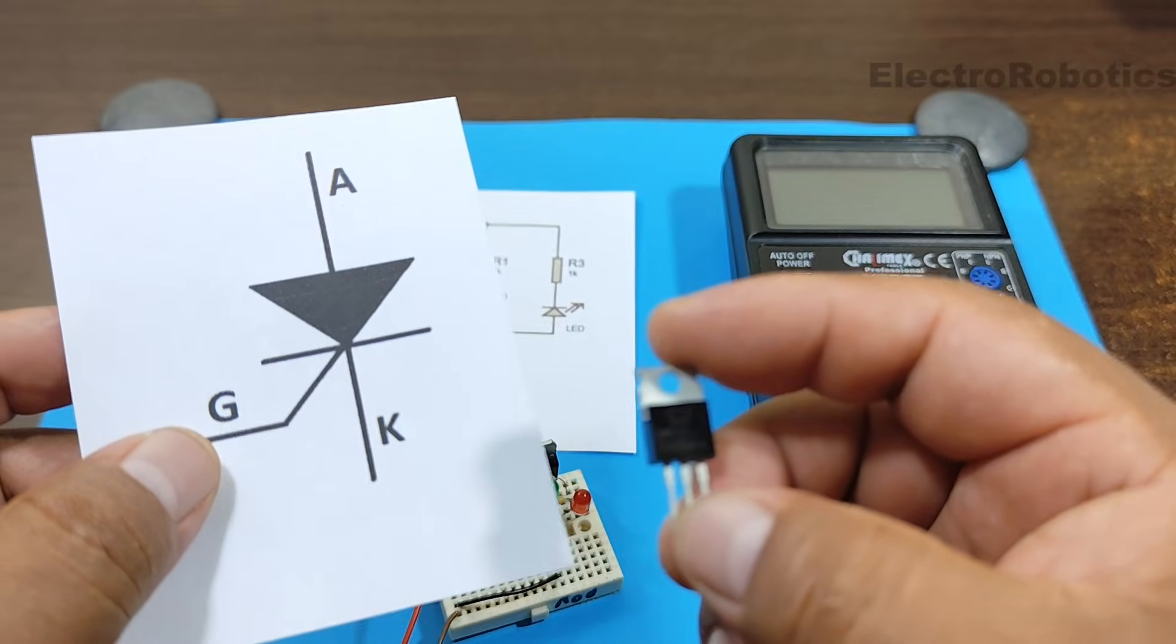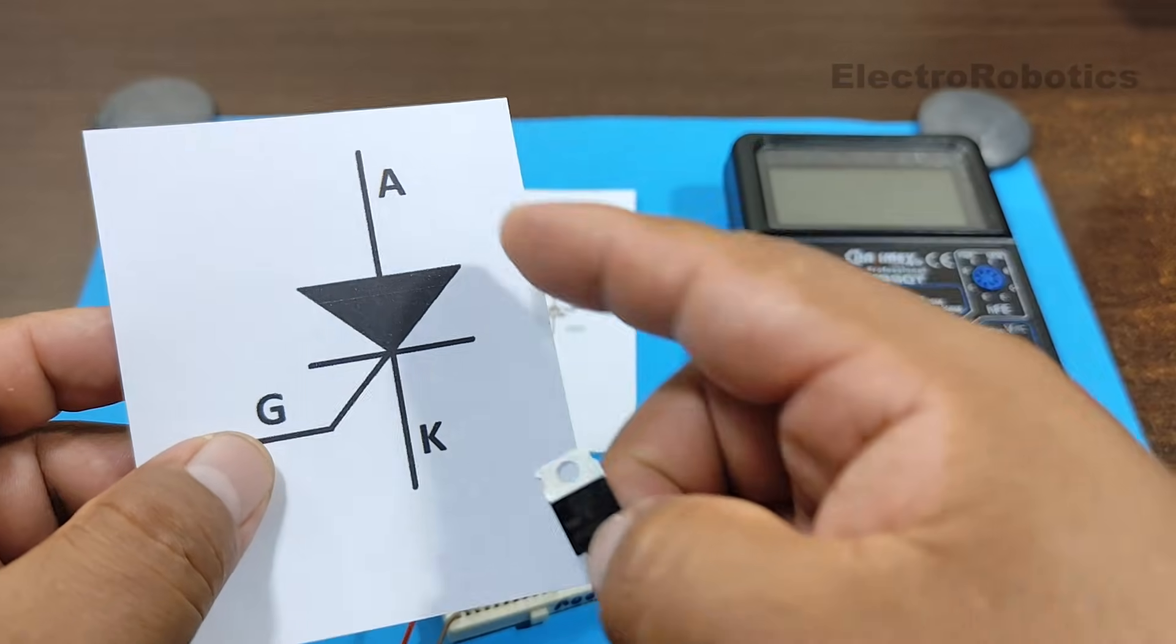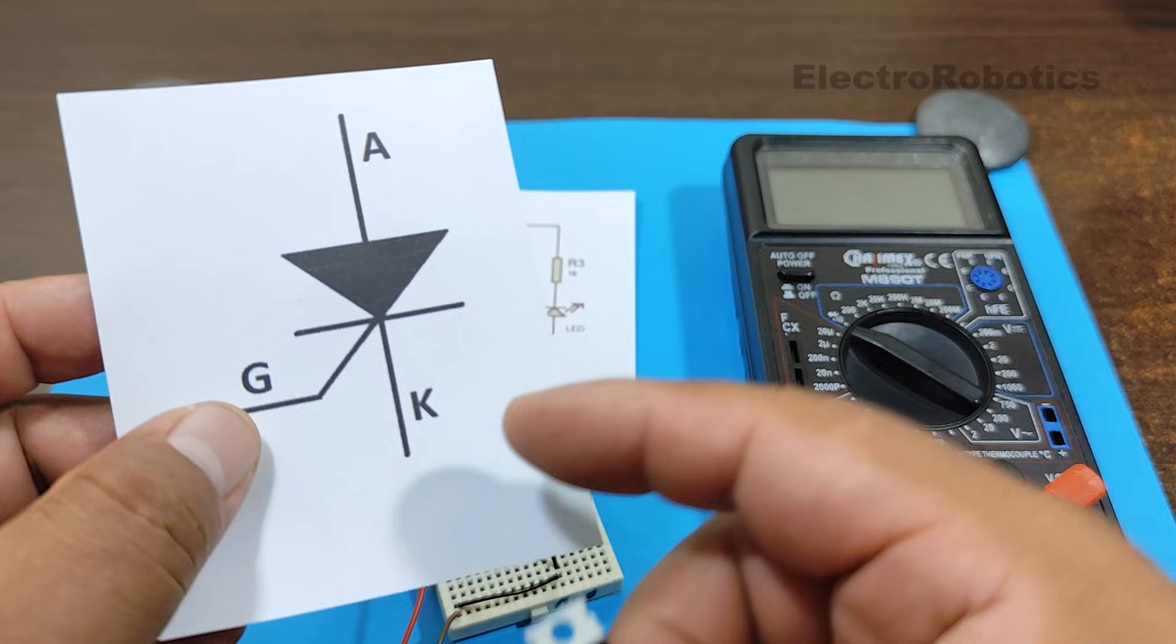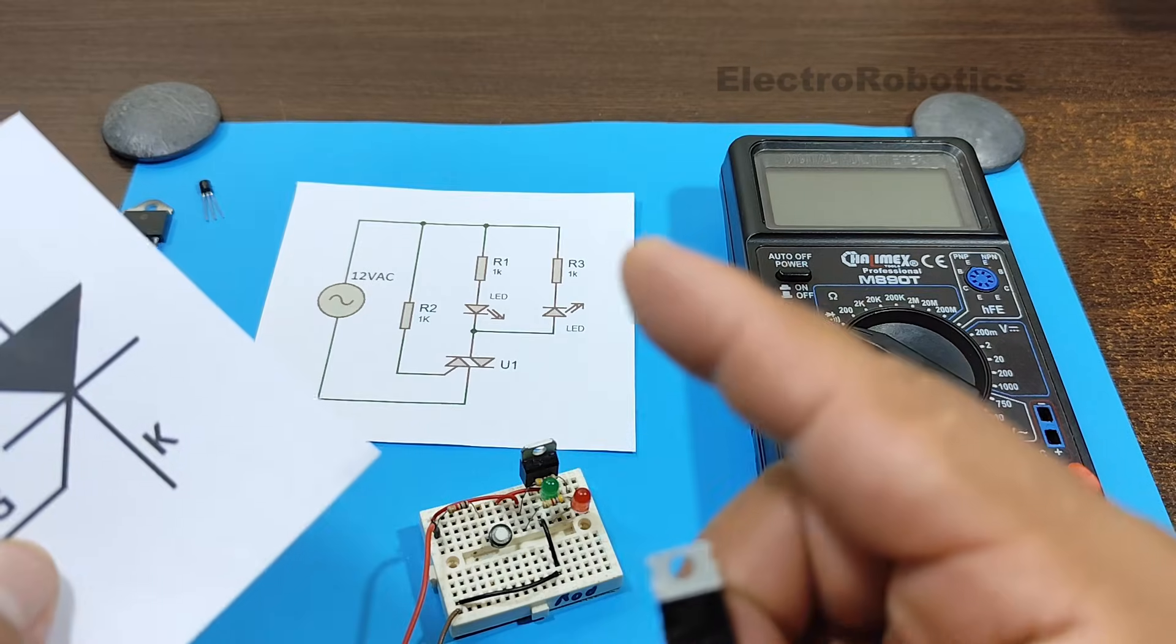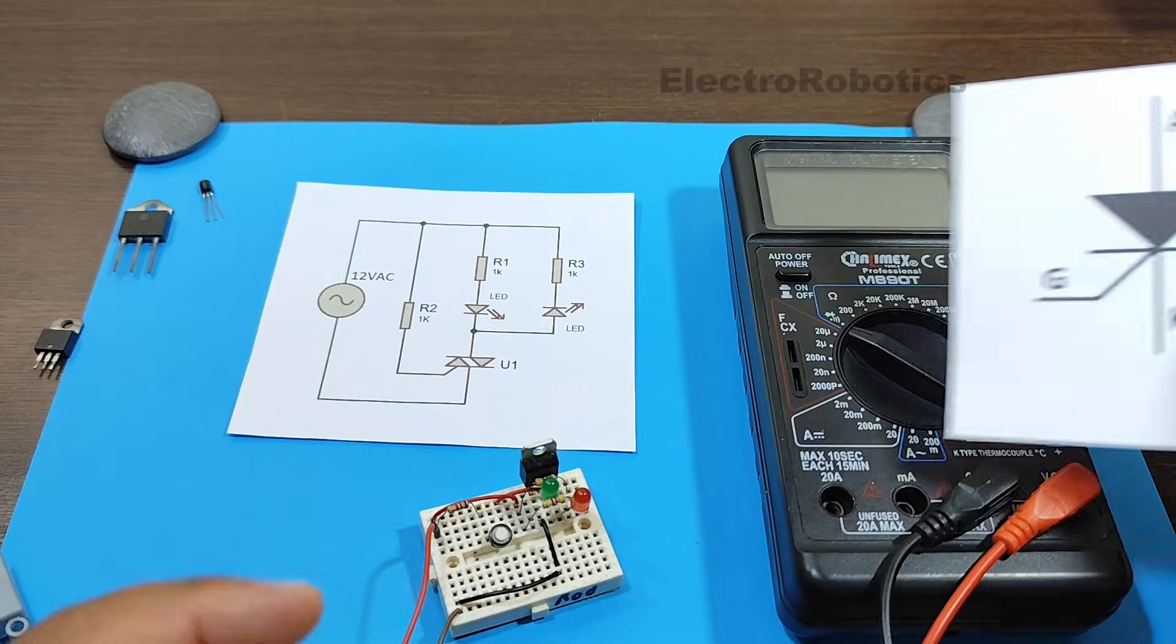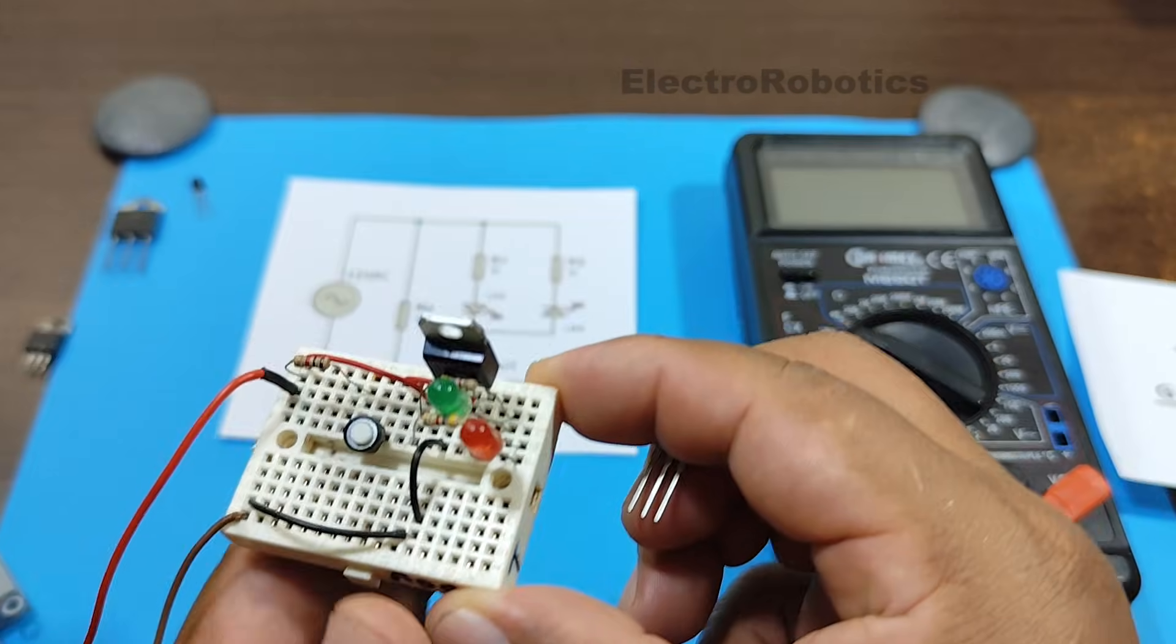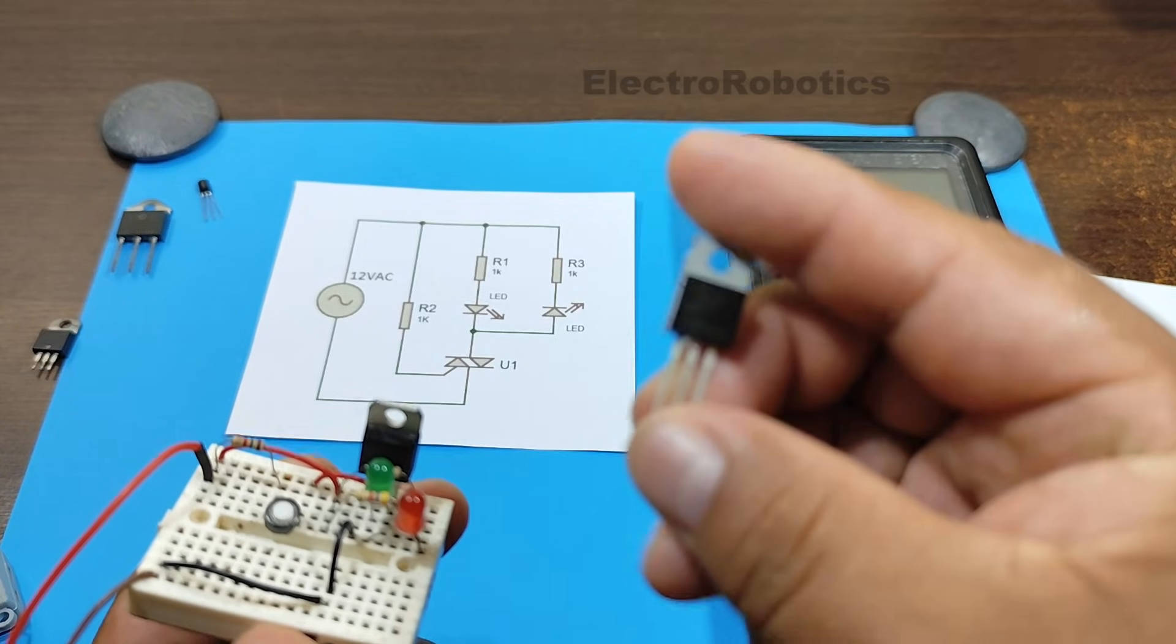Now let's confirm that the SCR only allows one half cycle to pass through. And if you had two SCRs, that is, one triac, it would allow both half cycles to pass through. We're going to replace the triac with an SCR.